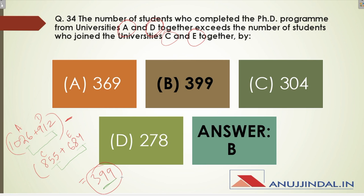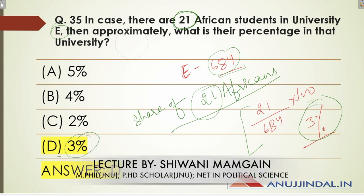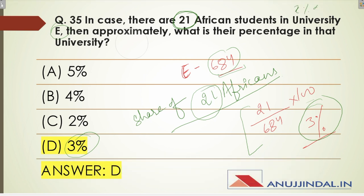Question 35: In case there are 21 African students in university E, approximately what is their percentage in that university? University E has 684 students total, and there are 21 African students. So you do 21 upon 684 into 100, which gives approximately 3%. This is how the DI section is solved. The key is to first extract the actual number of students by calculating X% of 855 for one table and X% of 5700 for the other.